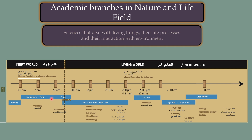Moving to a larger scale, we find biomolecules such as lipids, proteins, carbohydrates, and nucleic acids — the branch dealing with this scale is biochemistry. Moving to a larger scale still, we find viruses, and the science that deals with this scale is virology. At greater scales, we find cells, bacteria, protozoa, and chromosomes. A group of sciences deals with these scales, including genetics, molecular biology, cell biology, microbiology, and parasitology.